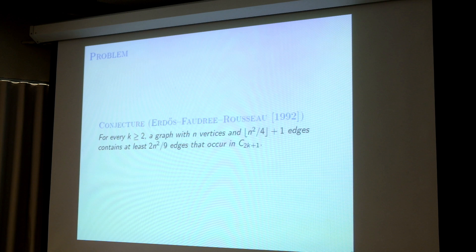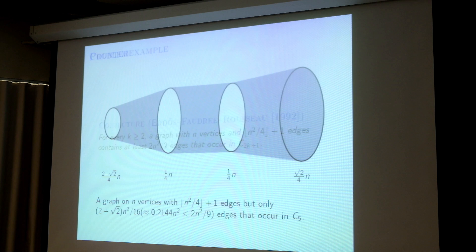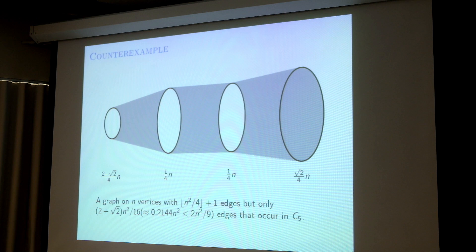The conjecture is clear. But unfortunately, this conjecture is not true. This is a counterexample for the case k = 2, which means for the C5 case. The conjecture says you need to have 2n²/9 edges that occur in C5, but this counterexample shows fewer. The counterexample has 4 parts: three independent sides and a clique, joined by all possible edges.